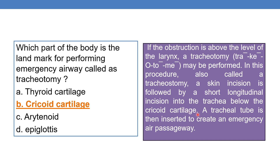It is a skin incision followed by a short longitudinal incision into the trachea below the cricoid cartilage. Through that incision, a tracheal tube is inserted to create an emergency air passageway. So the landmark for performing emergency tracheotomy is cricoid cartilage; the incision is made at the cricoid cartilage.